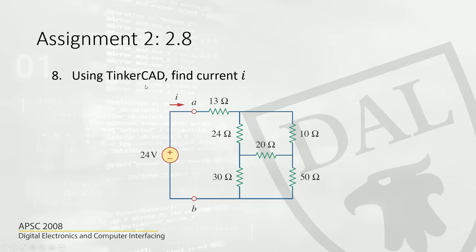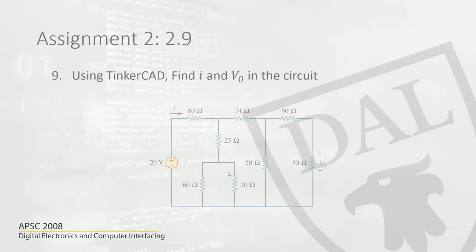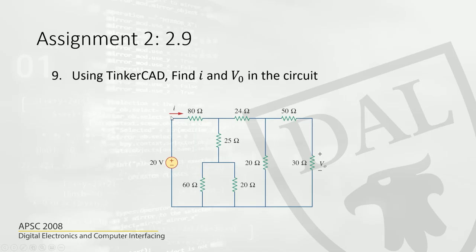That is question number eight. The next one is the same, but in addition you will have to do another thing. You will have to find the current — you know how to find the current of the circuit — and you just have to connect a meter from the positive to the terminal of the 80 ohm resistor.